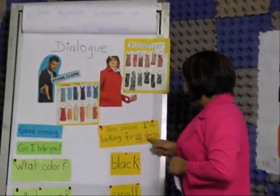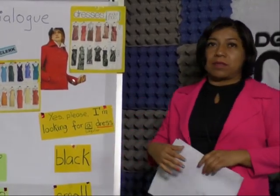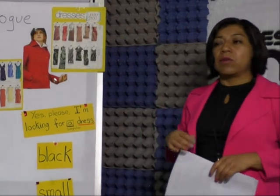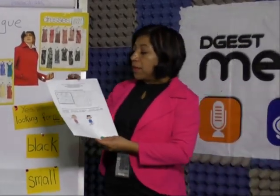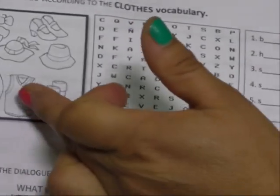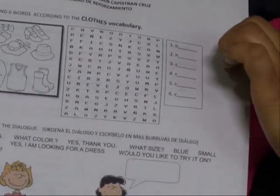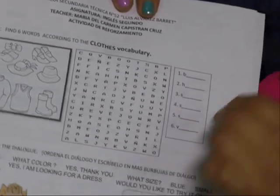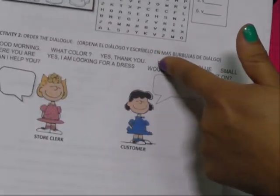También recuerda que marcamos esta prenda de vestir porque tú puedes adquirir el producto que tú quieras. No nada más este diálogo te va a servir para comprar un dress — que es un vestido — sino que con este diálogo vas a poder adquirir cualquier otro producto. Nosotros te enviamos un pequeño material para que tú lo trabajes en casa. Este material nos habla de lo mismo: tenemos "vocabulary about clothes". Con estas imágenes vas a buscar diferentes palabras que se vieron en clase. Te estamos anotando con qué letra inicia cada palabrita para que te sea más fácil. Cualquier duda puedes apoyarte de tu diccionario o en internet.